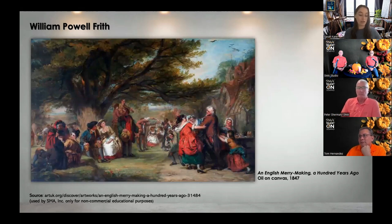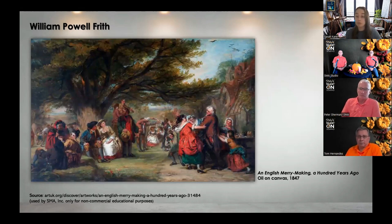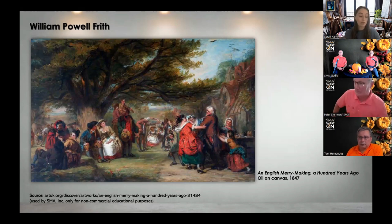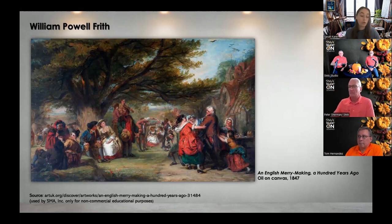An English Merrymaking 100 Years Ago was exhibited at the Royal Academy in 1847, a canvas measuring 44 by 73 inches. It was among Frith's most famous pictures and an entire chapter was devoted to it in his autobiography published 40 years later. The present painting is actually a smaller version or replica of the Royal Academy exhibit. At this time Frith had married in 1845 and his wife gave birth to their first child in 1846. So with family support and a newly established reputation, the 28-year-old Frith worked tirelessly, painting large pictures to be exhibited and smaller paintings for immediate sale.